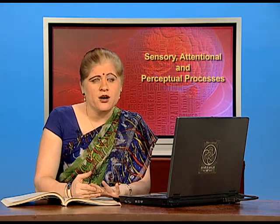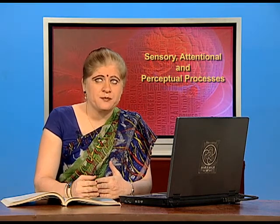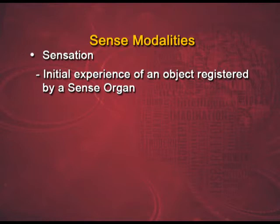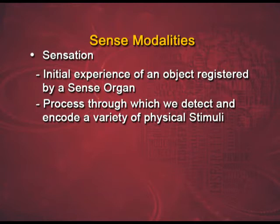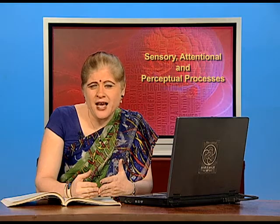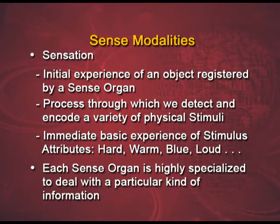We have sense organs which help us make sense of the world. Here we come to the definition of sensation. You can see at your screens: sensation is the initial experience of an object registered by a sense organ. It is also the process through which we detect and encode a variety of physical stimuli. The immediate basic experience of stimulus attributes — like whether they are hard, warm, blue in colour, loud in sound — are all given to us by sensation. Each sense organ is highly specialized to deal with a particular kind of information, and therefore it is also known as the sense modality.